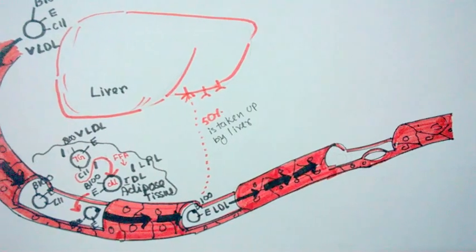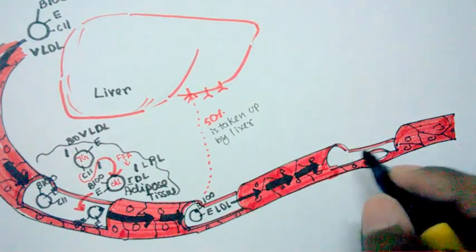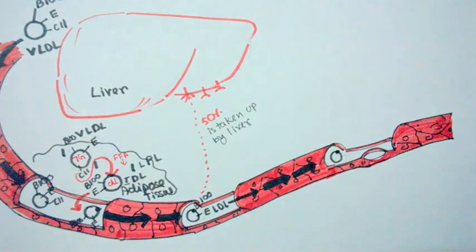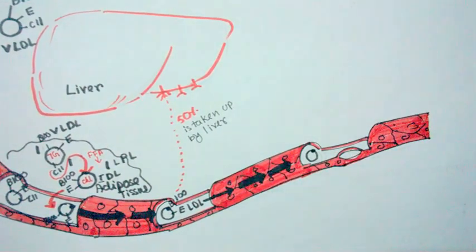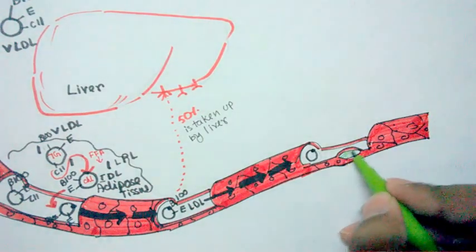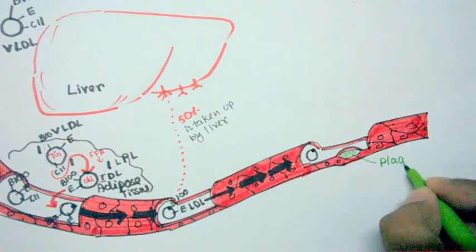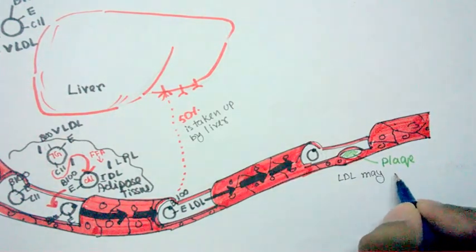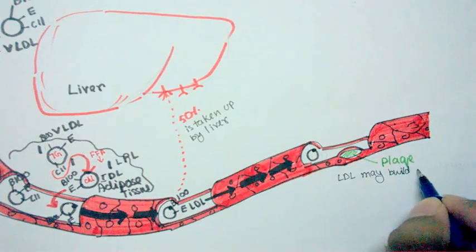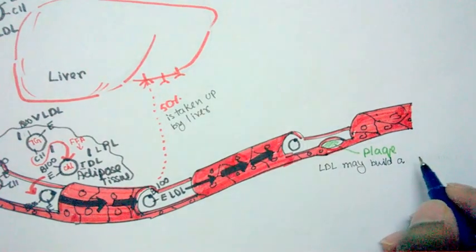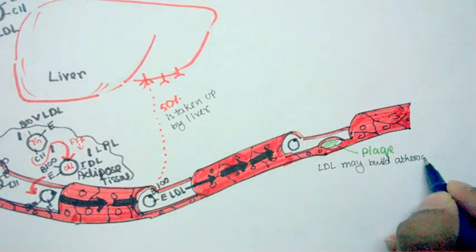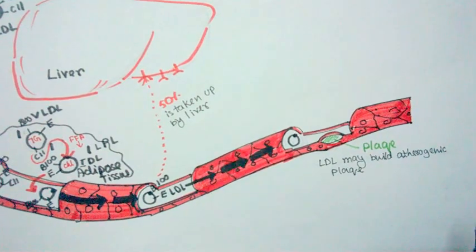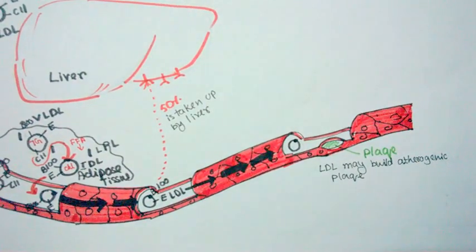However, when LDL levels are high for some reason, LDL does bad things to our body. For instance, in an artery, LDL can ultimately deposit its cholesterol content and form an atherogenic plaque. So high LDL may build up atherogenic plaque.